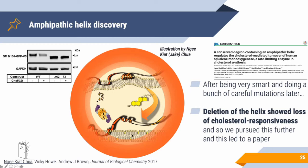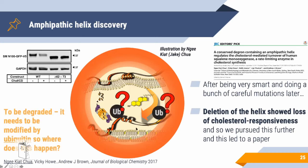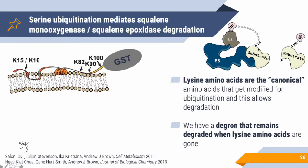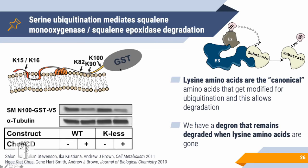There's still a gap: for proteins to be degraded, they need to be ubiquitinated. So where exactly is squalene monooxygenase modified by ubiquitin? Normally, ubiquitin is added to lysine residues. The lab generated a lysine-less construct — removing all lysines — but when you add cholesterol, the protein is still degraded. This tells us lysines are not the ubiquitination sites here.